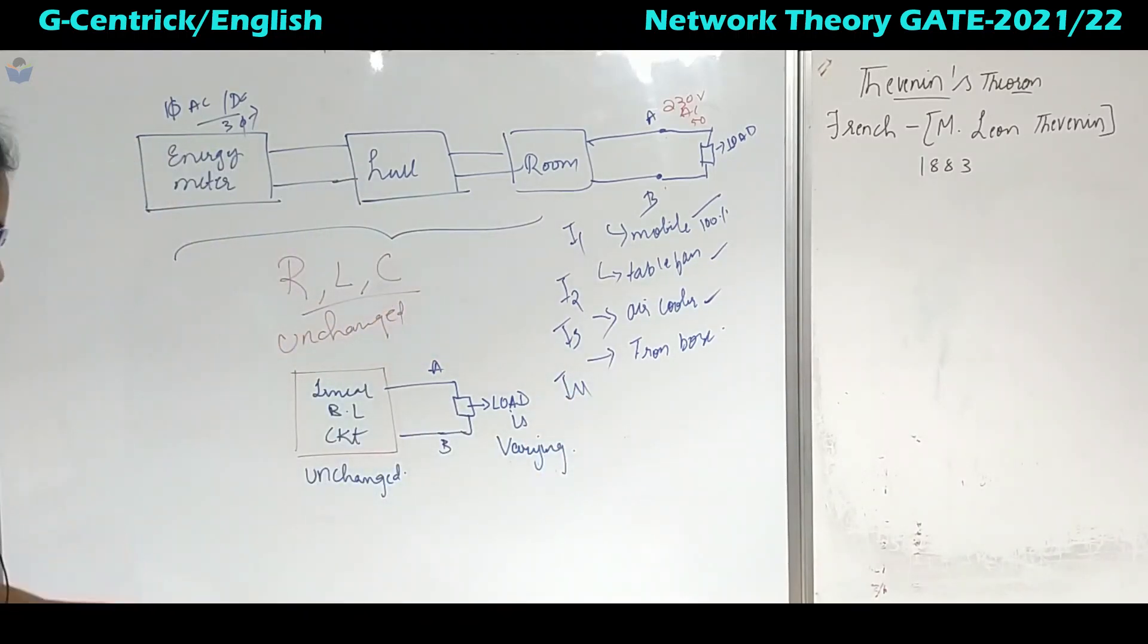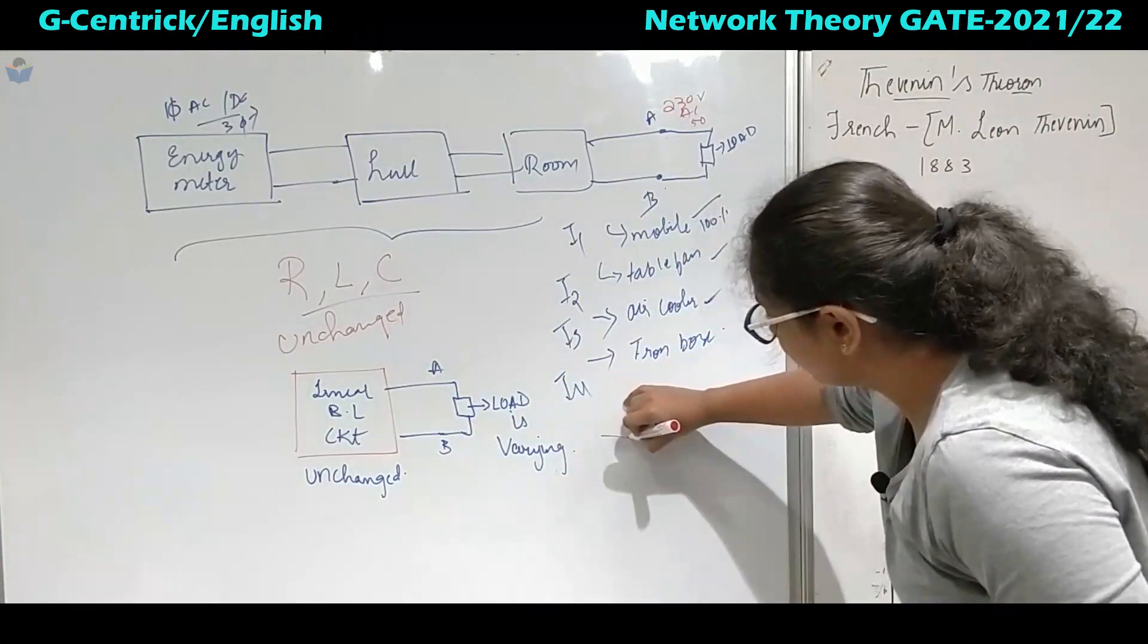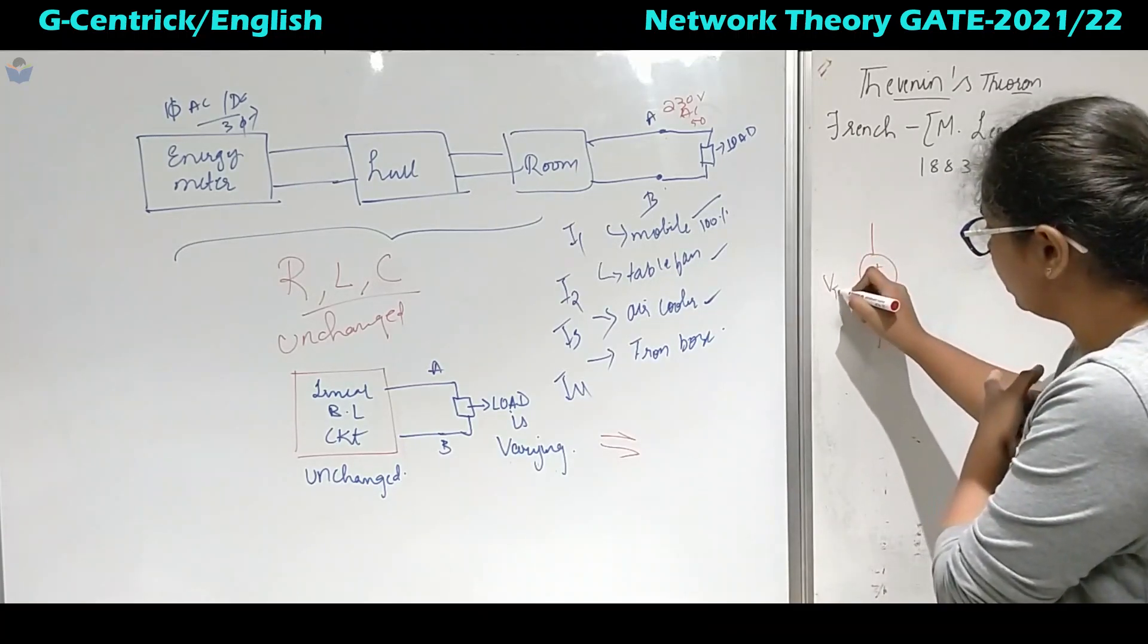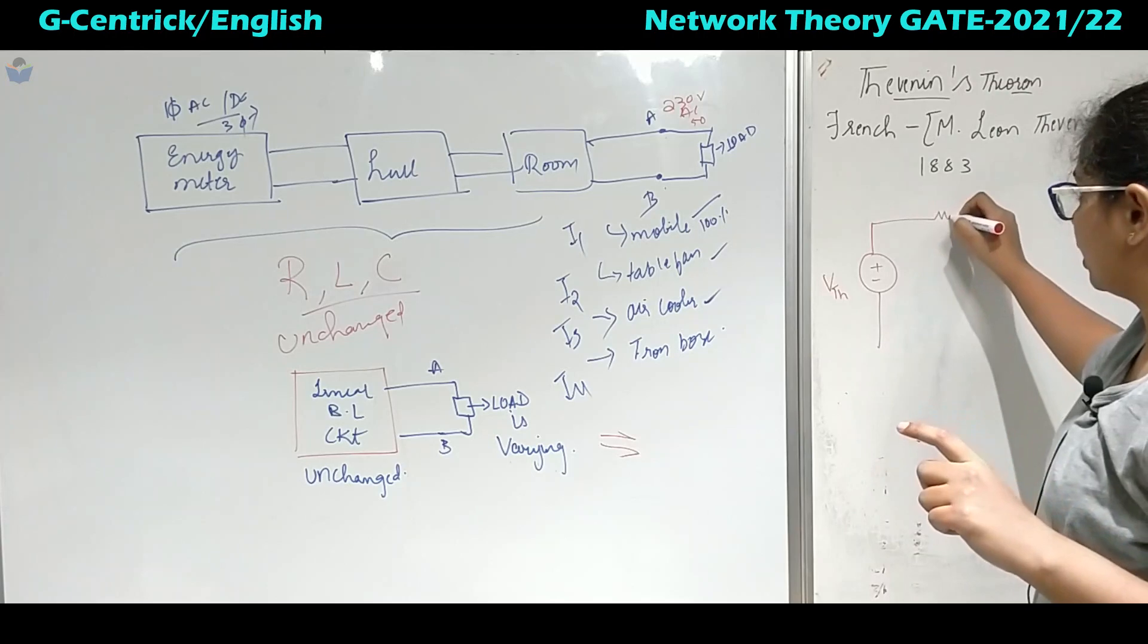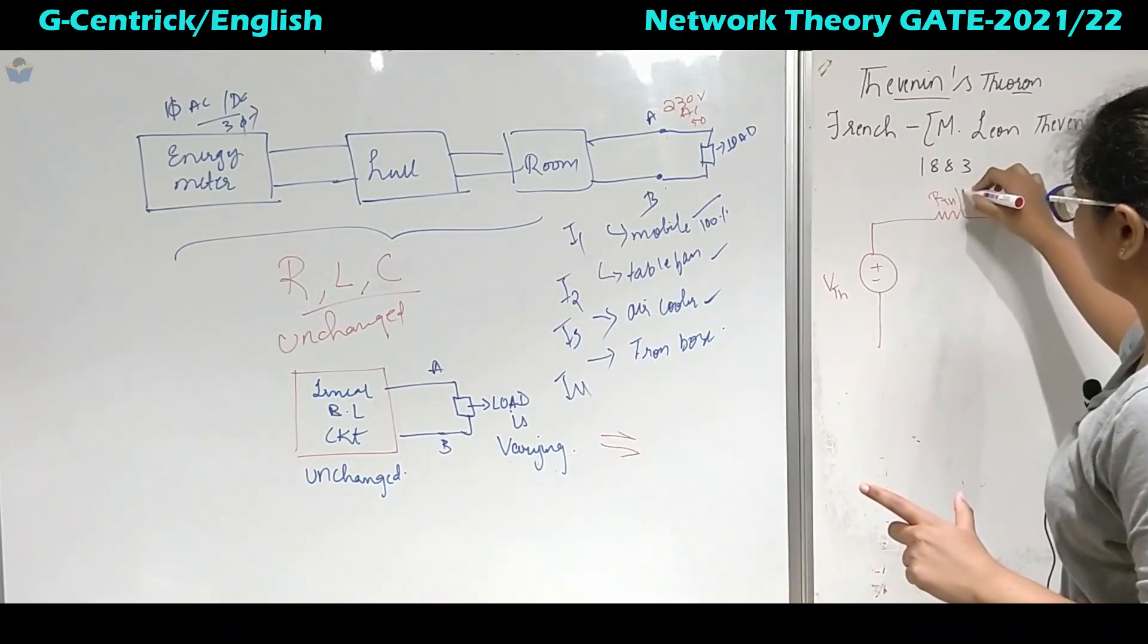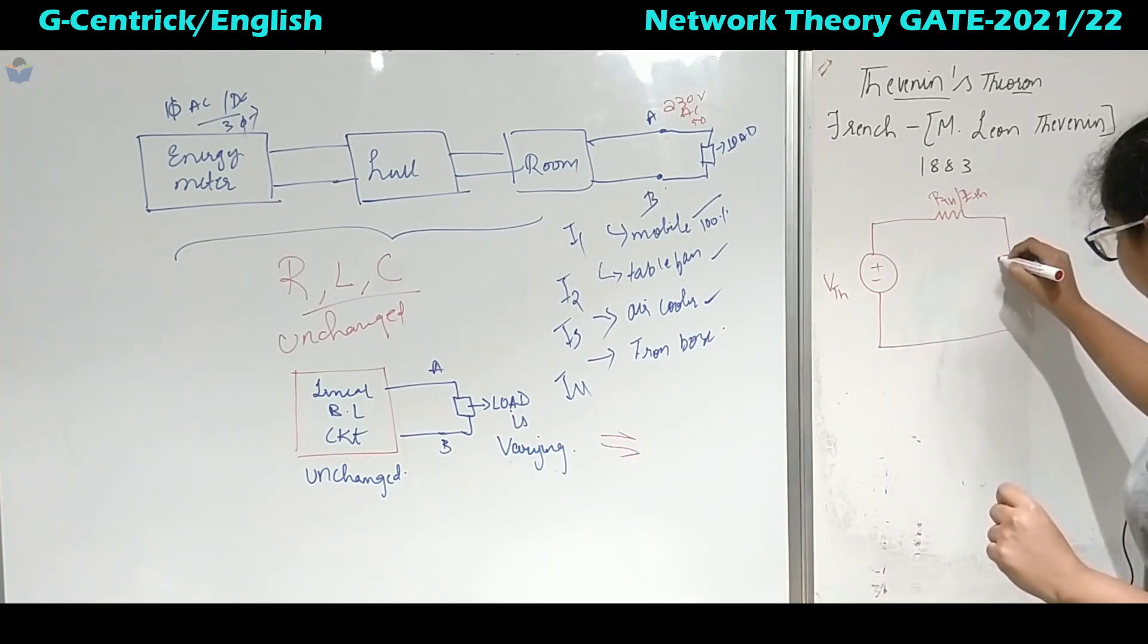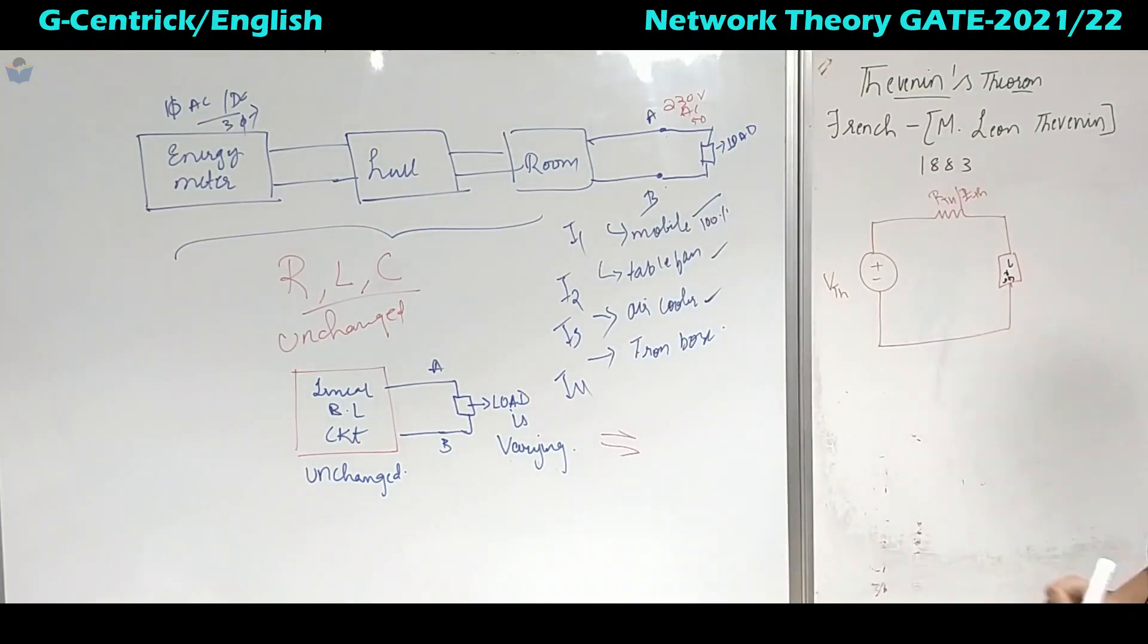When this load is varying, he gave an idea to solve this complex network. He replaced this equivalent network. He did it as this voltage source, it can be either AC or DC. We will take it as VTH, one equivalent source. He gave it as one equivalent source which he called RTH, one equivalent resistance. This will be equivalent.